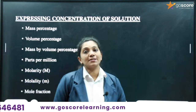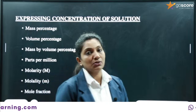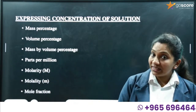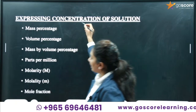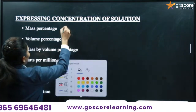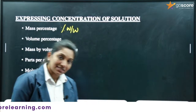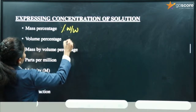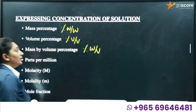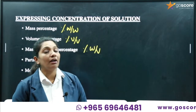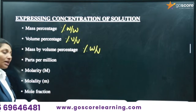Now let us see the different methods of expressing the concentration of solutions. There are different ways: percentage weight by volume, percentage weight by weight, or percentage volume by volume — that is, mass percentage, volume percentage, and mass by volume percentage. Mass percentage means how much mass of solute is present in 100 grams of the solution. Volume percentage is percentage volume by volume. Mass by volume percentage means how much grams of solute is present in 100 ml of solution.